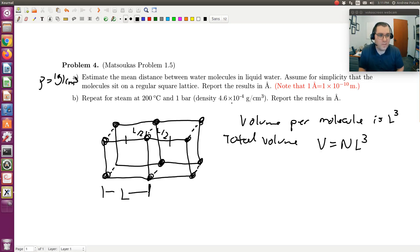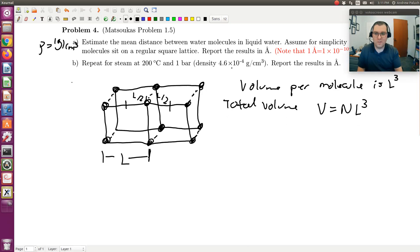So if I'm given a density in grams per centimeter cubed, how am I going to get an estimate of the interaction distance?